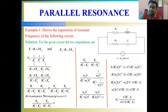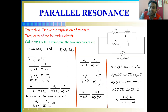Our objective is to find the resonant frequency for a given circuit. In this circuit we have a resistor and inductor in one branch, and another branch having a resistance and a capacitance. The impedance of the first branch is R1 plus jXL1. The second branch impedance is R2 minus jXC. For this we have to find the resonant frequency. The total admittance is the reciprocal of total impedance, that is 1/Z1 plus 1/Z2.